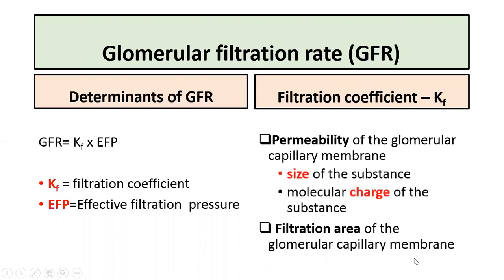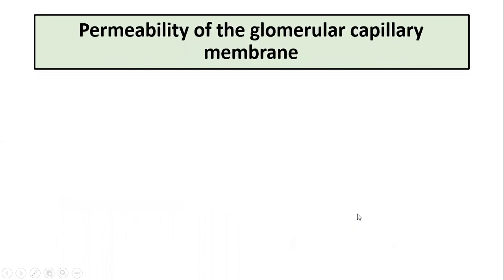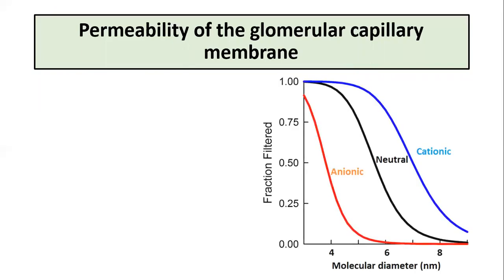The permeability of the glomerular capillary membrane depends on two factors, and how these factors influence permeability is explained in the graph. This graph explains, based on the x-axis which shows the size of the substance — the molecular diameter in nanometers — and the y-axis which shows the fraction of molecules filtered.